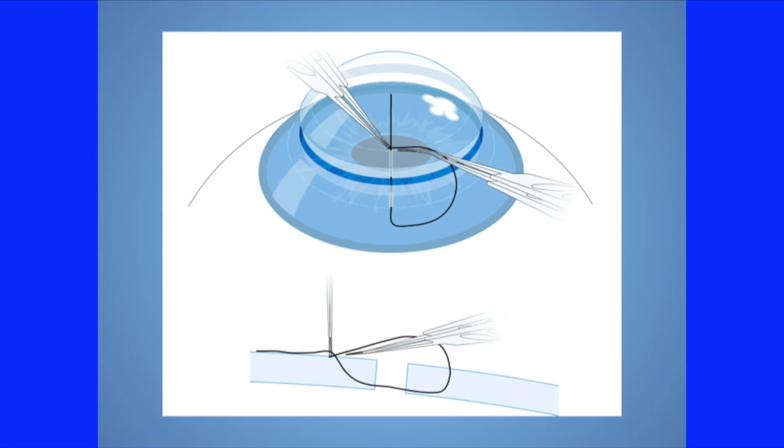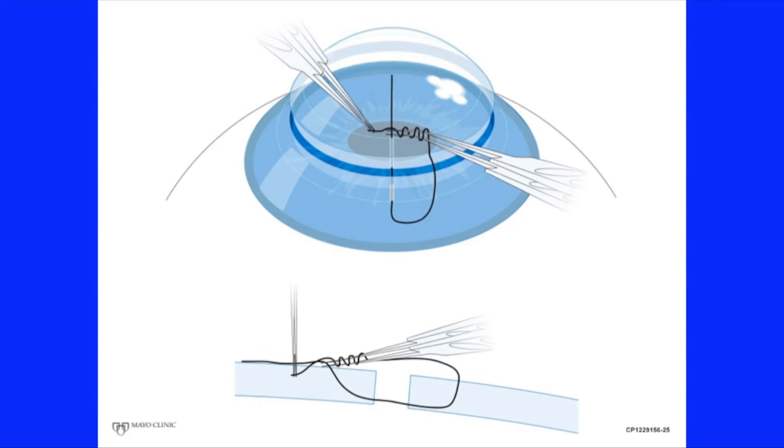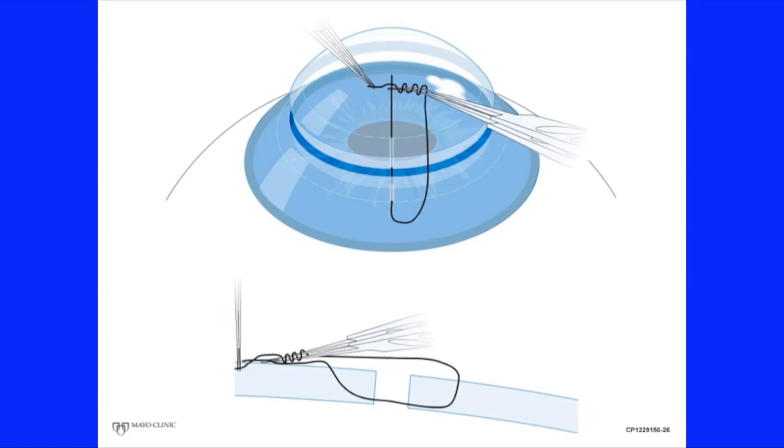To start to tie, move the straight tying forceps to the short suture but keep the curved tire in position. Place three loops around the curved tire. Gently separate the tire tips and press the side of the inferior tip into the graft surface until the short suture slides over the lower tip. Then slide the curved forceps up the short suture until you reach the tip of the suture and grab there.